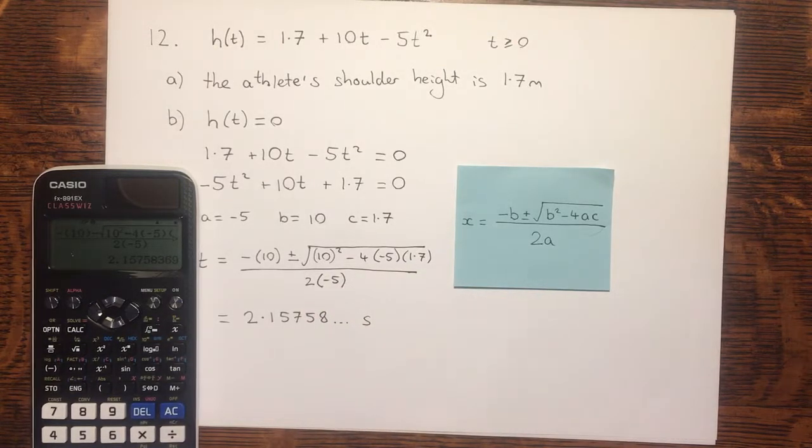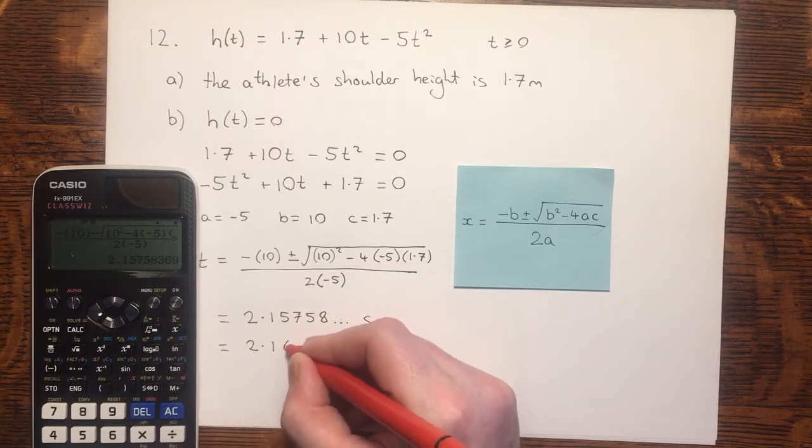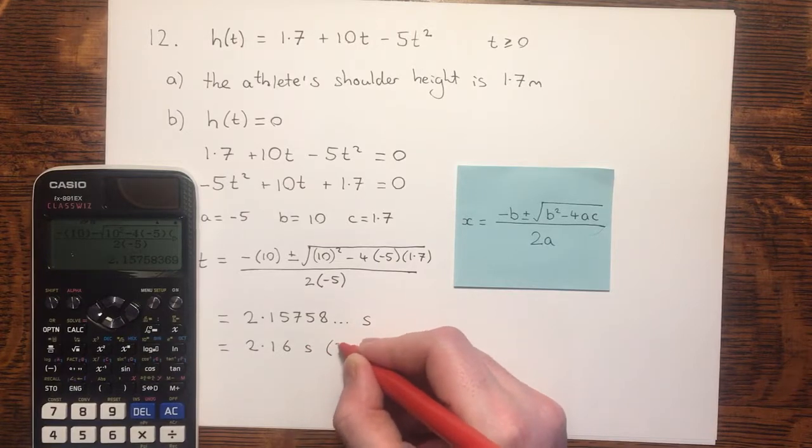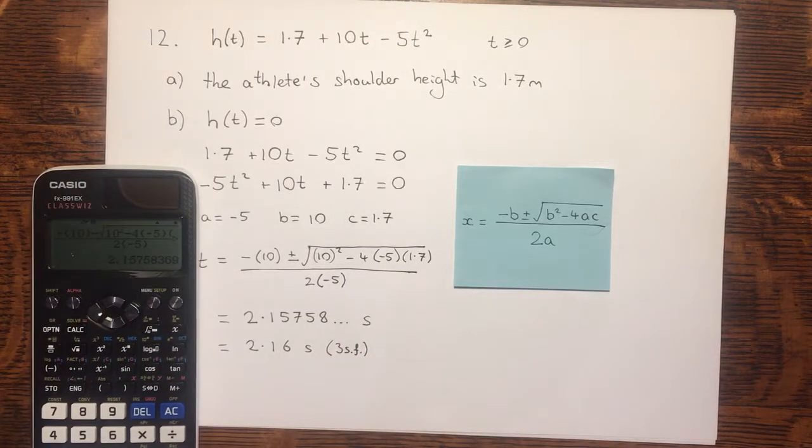That seems reasonable in this context. If you throw a shot put, it will only be in the air for a few seconds before it hits the ground. Let's have a look at the question. Does it specify a degree of accuracy? Use the model to calculate how many seconds after launch the shot put hits the ground. No degree of accuracy specified? I'm going to go with three significant figures. 2.16 seconds to three significant figures. Part B done.